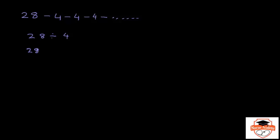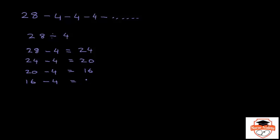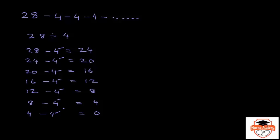You do 28 minus 4, you get 24. You do 24 minus 4, you get 20. You do 20 minus 4, you get 16. You do 16 minus 4, you get 12. You do 12 minus 4, you get 8. You do 8 minus 4, you get 4. And finally, you can do 4 minus 4 and you end up with 0. So we could do the subtraction 7 times, and therefore 28 divided by 4 is equal to 7.